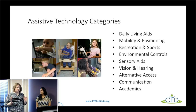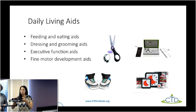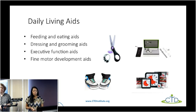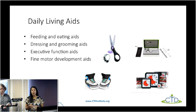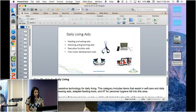The first category we want to talk about is daily living aids, which can range from a wide variety of different tools — it really just depends on where an individual is hoping to get more support so they can be a little more independent. A couple of examples include tools to help with eating, dressing, and anything executive function related.